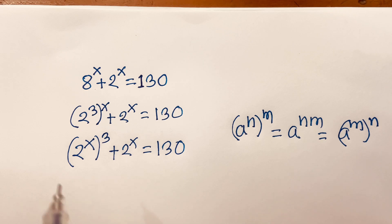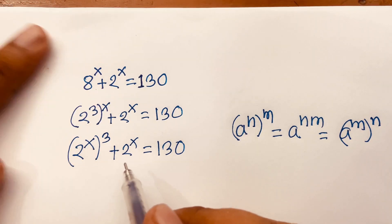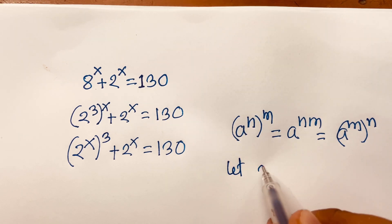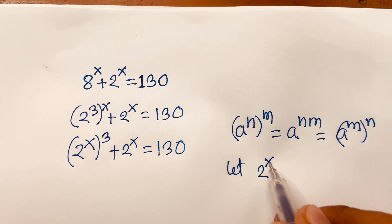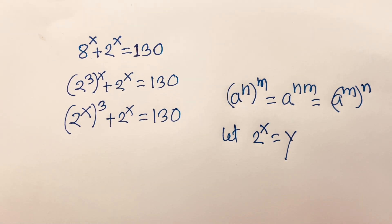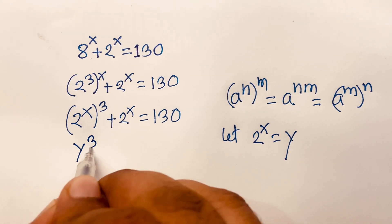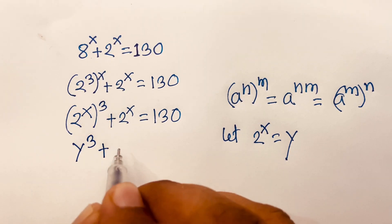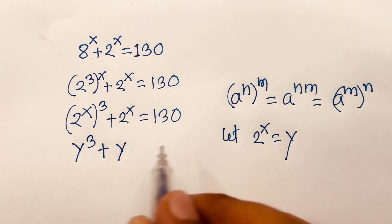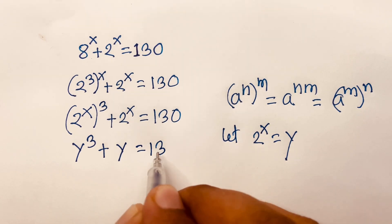Look, here is 2 to the power x and again 2 to the power x. So, let 2 to the power x equal y. Now I can write y cubed plus y is equal to 130.